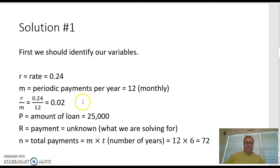Let's first identify our variables. The rate is 24%, which is 0.24. There's 12 payments per year since it compounds monthly, so our m is 12. Our r over m is going to be 0.02, which we're going to use in quite a few places. The P, that's the principal, or in this case the amount of the loan, which is $25,000. You can think of it also as the portion of the total which is not the interest.